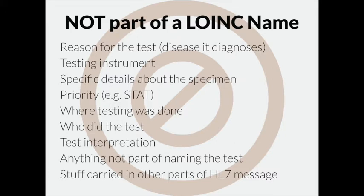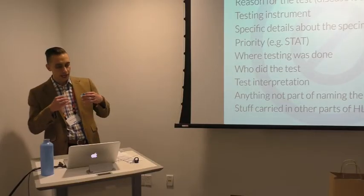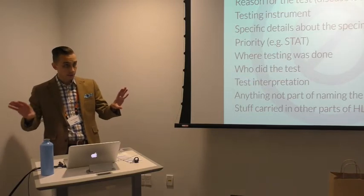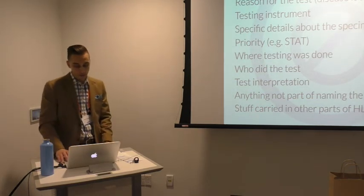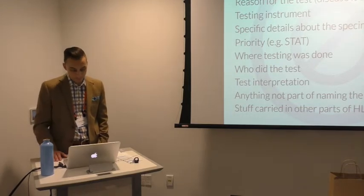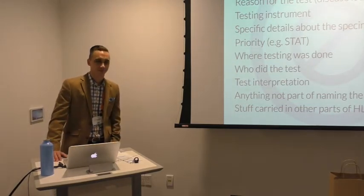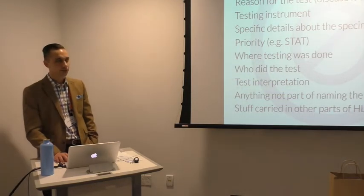The fully specified name is designed to include all info necessary to distinguish among clinically important differences — it defines the essential uniqueness of each LOINC term, so no two terms have the same name. It's the recommended name to parse when deciding whether a LOINC term is the right one to use. Notably, certain things are intentionally excluded from the name: the reason for the test, the actual instrument, real specific details about the specimen, whether it was ordered stat or routine, where it was done, who did it, and the actual interpretation.